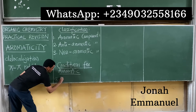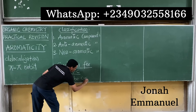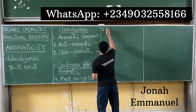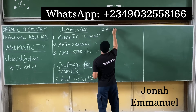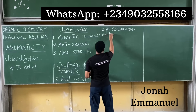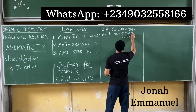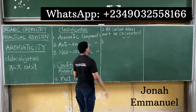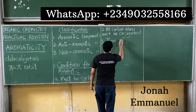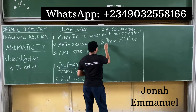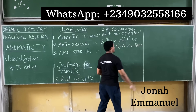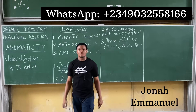Condition one: it must be cyclic. Condition two: it must be conjugated — all carbon atoms must have a double bond. Condition three: there must be 4n + 2 pi electrons for it to be aromatic.